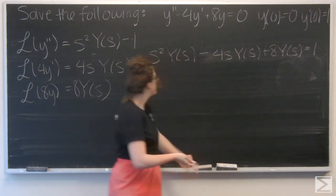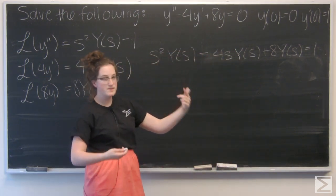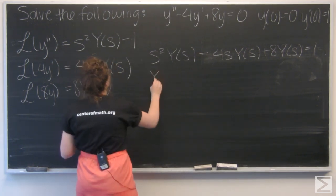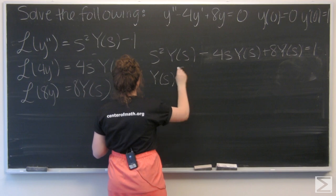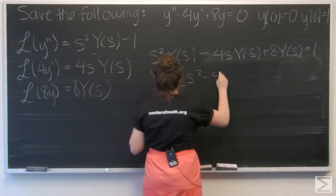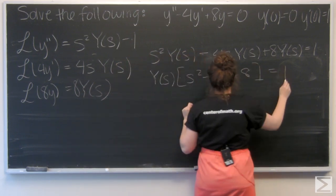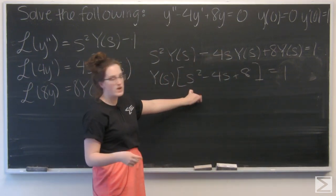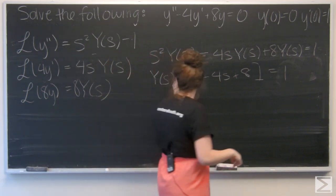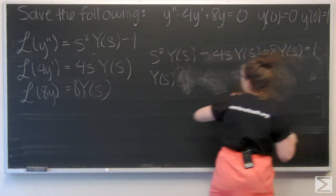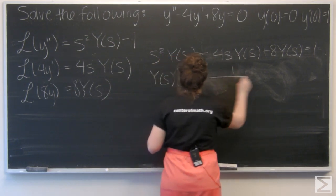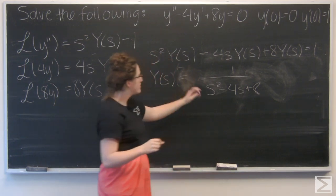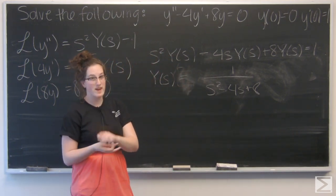So I cheated a little bit, but I just added one to both sides, and now I can factor a Y(s) out of the left-hand side of the equation. And then I can just divide both sides of the equation by s² - 4s + 8. So I have 1 over s² - 4s + 8 equals Y(s). Now I need to work on taking the inverse Laplace transform of this rational expression.